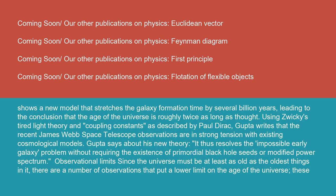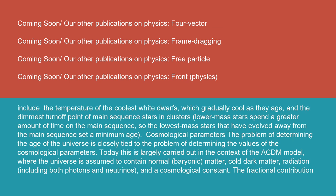Observational limits: Since the universe must be at least as old as the oldest things in it, there are a number of observations that put a lower limit on the age of the universe. These include the temperature of the coolest white dwarfs, which gradually cool as they age, and the dimmest turnoff point of main sequence stars in clusters. Lower-mass stars spend a greater amount of time on the main sequence, so the lowest-mass stars that have evolved away from the main sequence set a minimum age.